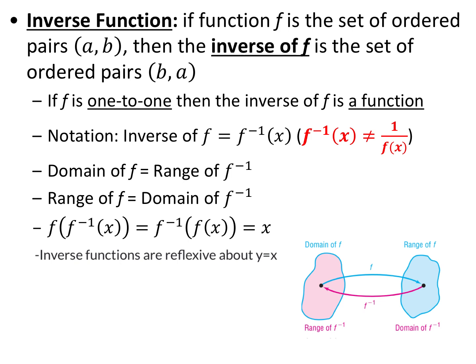Inverse functions: if f is the set of ordered pairs (a, b), then the inverse of f is the set of ordered pairs (b, a). So their inputs and outputs are switched. If f is a 1-to-1 function and you find its inverse, then the inverse of f is also a function. The notation we use is f⁻¹, but it doesn't mean f to the negative 1 power — it's just the notation for the inverse of f. It doesn't mean flip it over; it's just our notation.